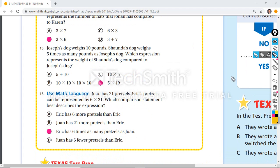The next one is a logic question. So Juan has 21 pretzels. Eric's pretzels can be represented by six times as many as 21, which comparison statement describes the expression.